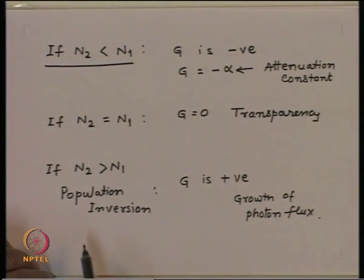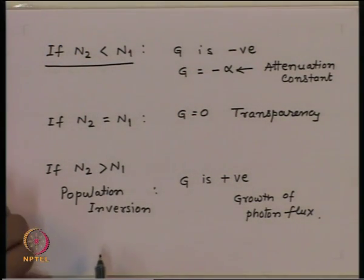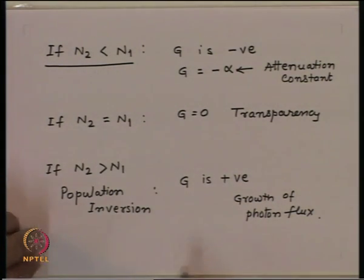The third condition is if N2 is greater than N1, which is the condition for population inversion — and that is what we are interested in. Then G becomes positive and the photon flux grows exponentially inside the material. What that essentially means is that as the photon travels more and more inside the material, and if the population inversion is maintained, the photon flux will go on increasing exponentially.